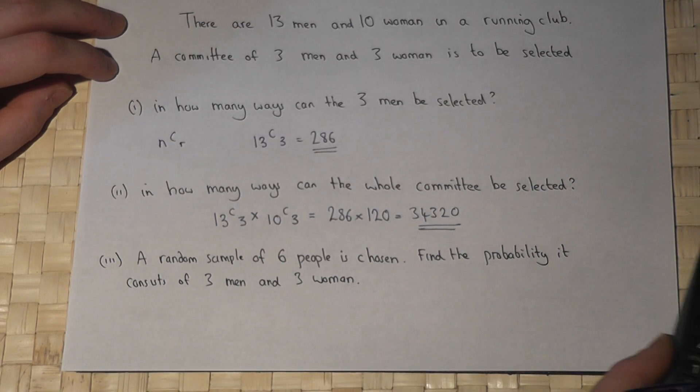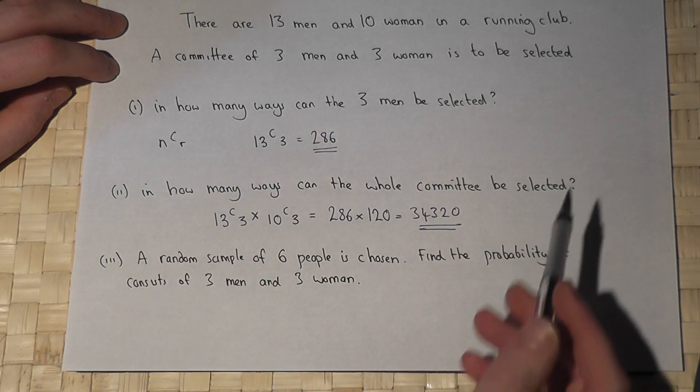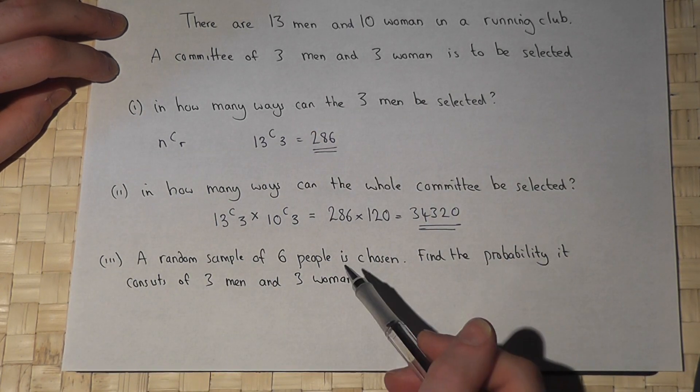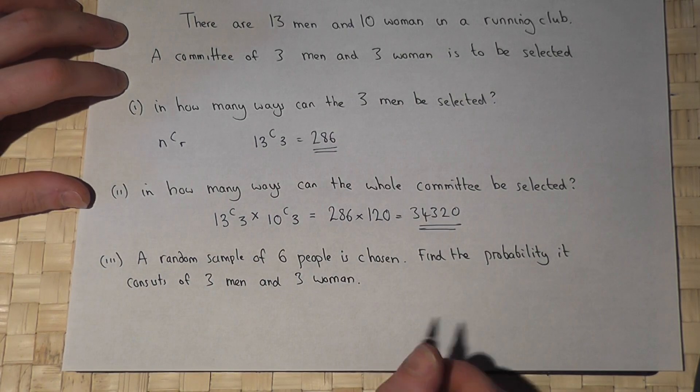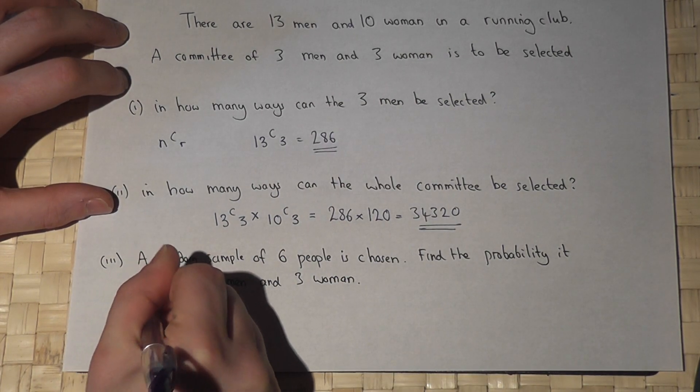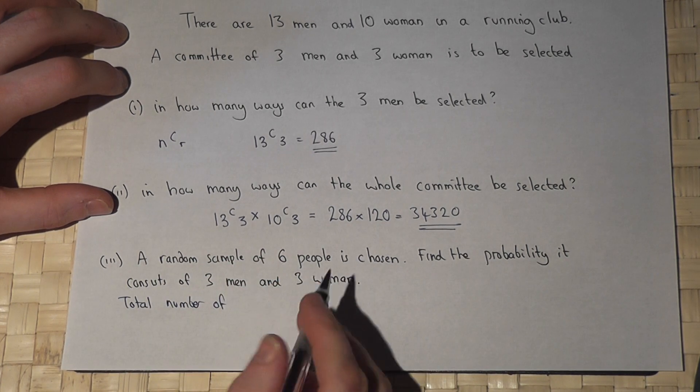In the final part, we're asked: what's the chance if we pick out six people at random that it satisfies the given condition of three men and three women? The total number of ways of picking six people...